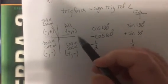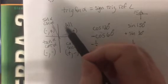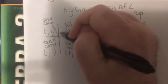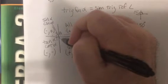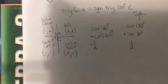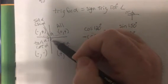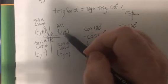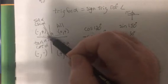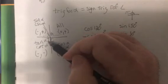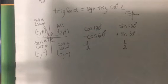Now, there used to be a teacher that taught there that said I shouldn't do this. But he retired, so I can do it now. There's a little phrase. All students take classes. Or you could say calculus. Those are the ones that are positive. All of them are positive in the first. Sine is positive in the second. Tangent's positive in the third. And cosine is positive in the fourth.